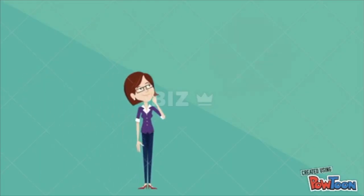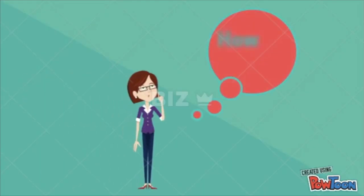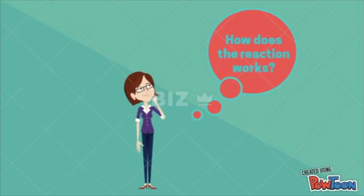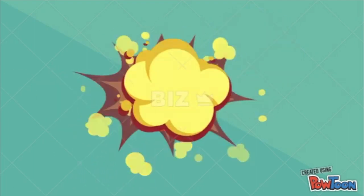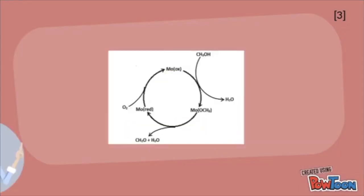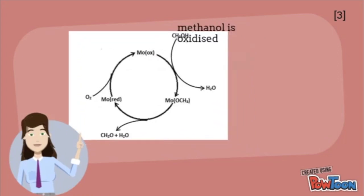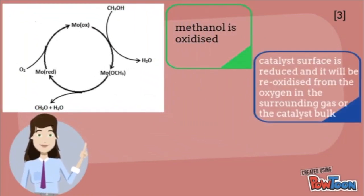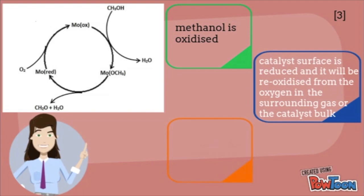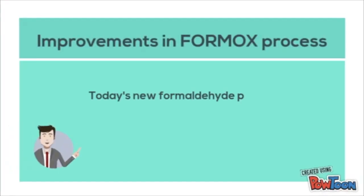The formalin is then fed into the steam generator. Methanol is oxidized, the catalyst surface is reduced and reoxidized, and then formaldehyde is synthesized.